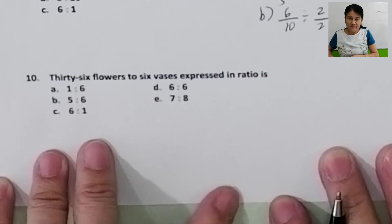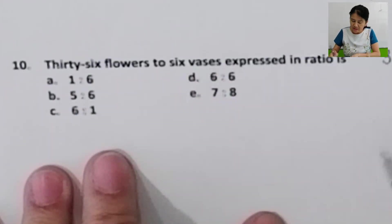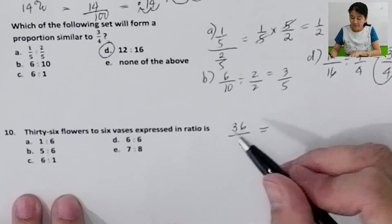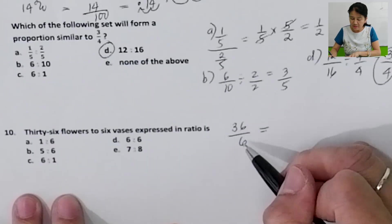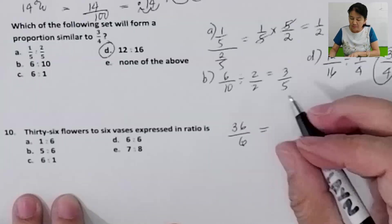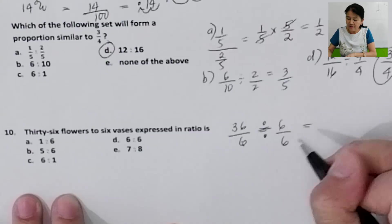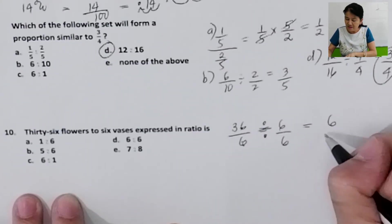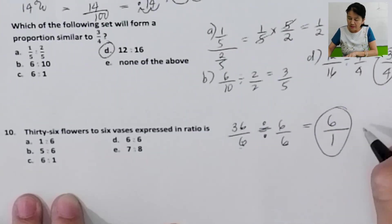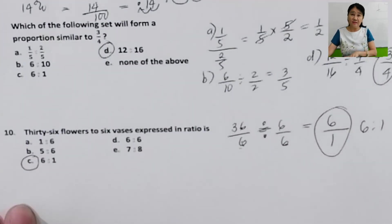Problem number 10, the last in this video. 36 flowers to 6 vases expressed as a ratio is 36 is to 6. Both are divisible by 6: 36 divided by 6 is 6, and 6 divided by 6 is 1. So the ratio is 6 is to 1, and the final answer is letter C.